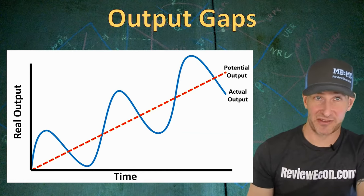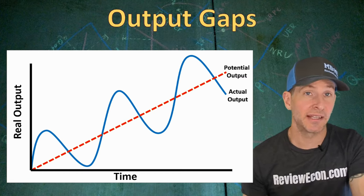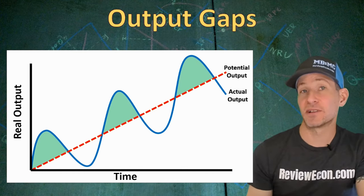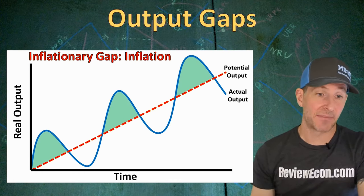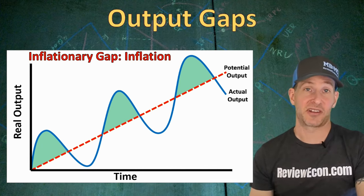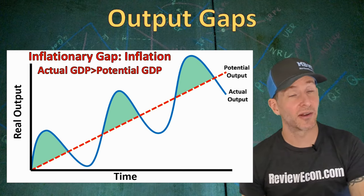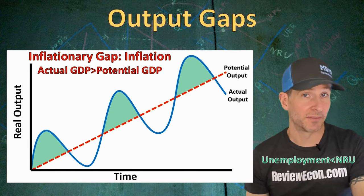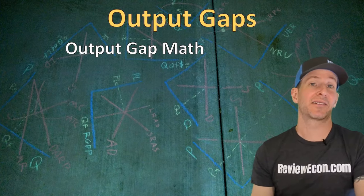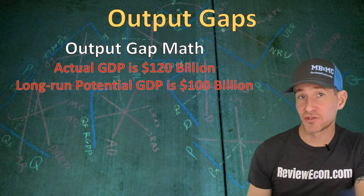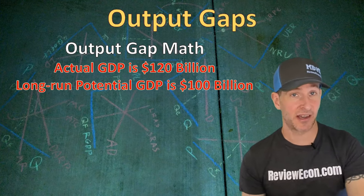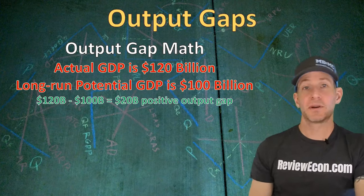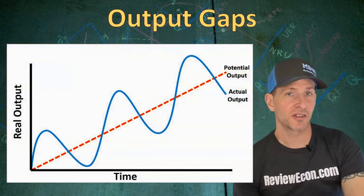Next, we'll talk about output gaps within the business cycle. When actual output is above our potential real GDP — shown by the red line — we call that an inflationary gap. The problem we often face is inflation. Actual GDP is greater than potential GDP, and our unemployment rate will be less than the natural rate of unemployment. For example, if actual GDP is $120 billion but long-run potential GDP is $100 billion, we have a positive output gap of $20 billion.